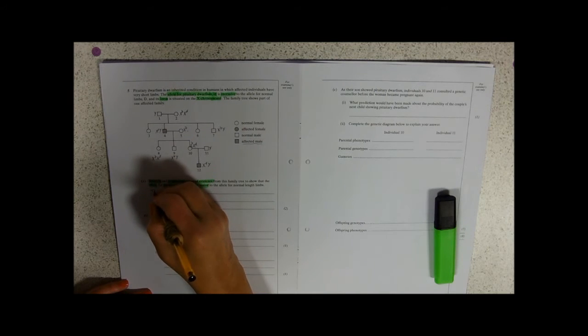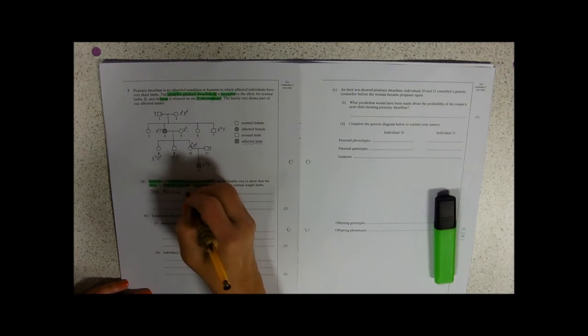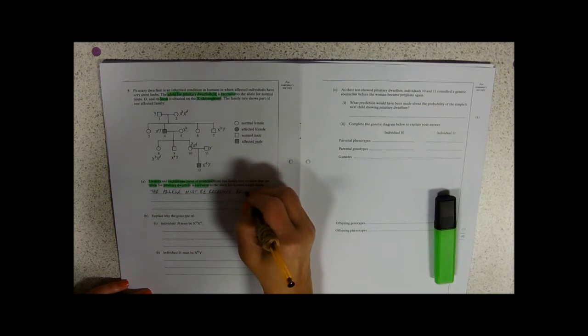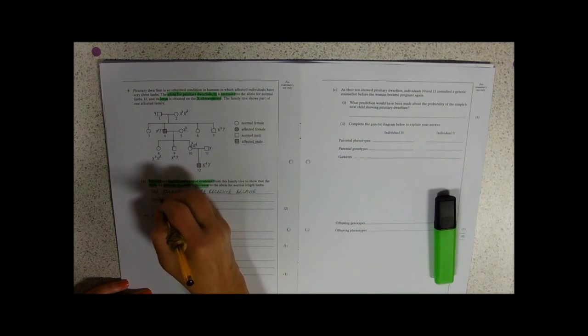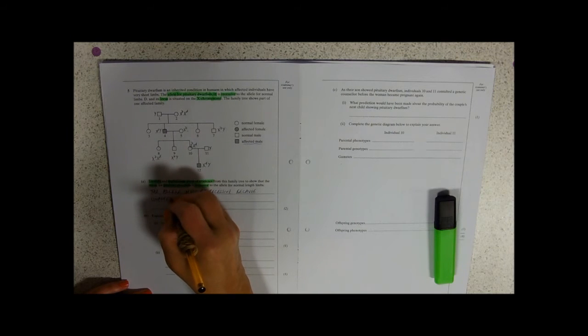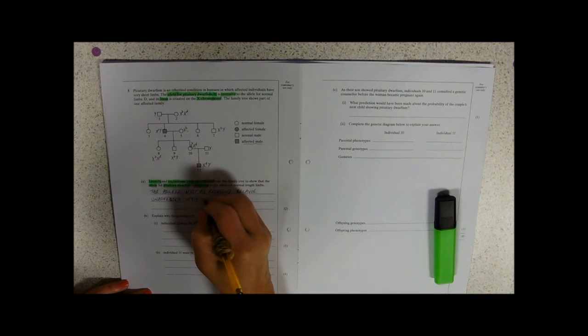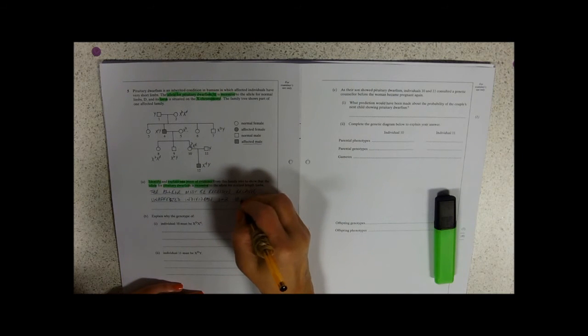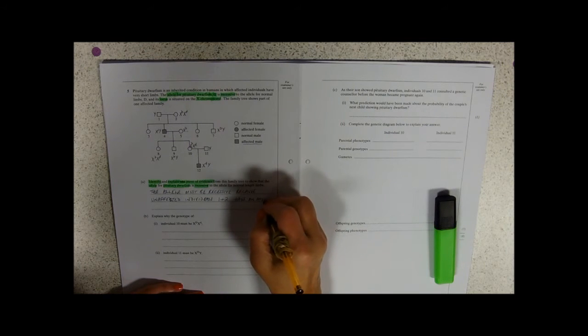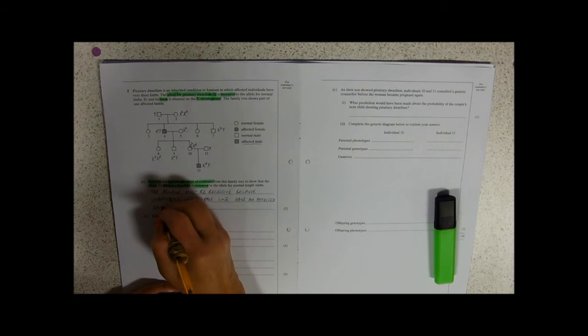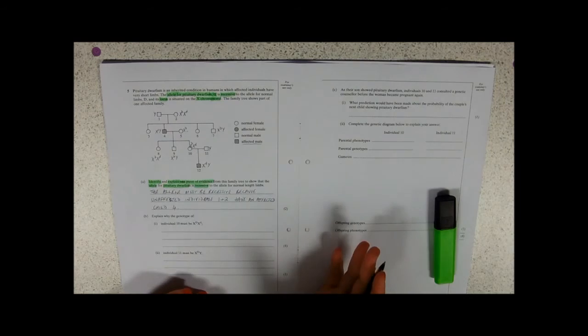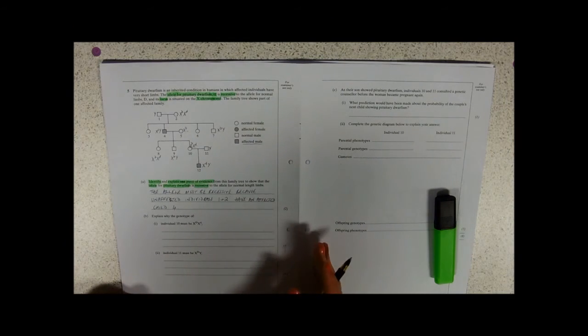So the allele must be recessive because unaffected individuals, this is my evidence. Individuals one and two, evidence, have an affected child, four. And that's it really. If they've got two unaffected parents giving rise to an affected child, well, that allele has got to be a recessive allele.